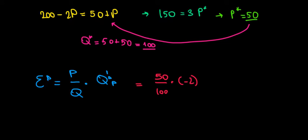Now let's work out the math here. We have 50 divided by 100 that's 1 over 2 and then we also can cancel out 2 by 2. That gives us 1 times minus 1 which equals minus 1, and this is the property of a unit elastic demand.